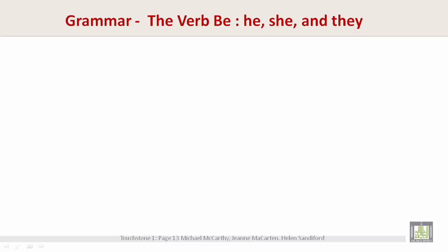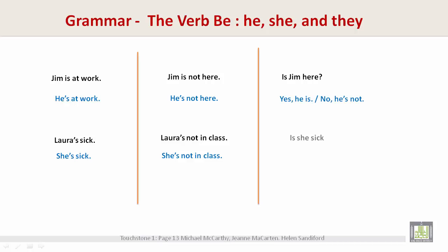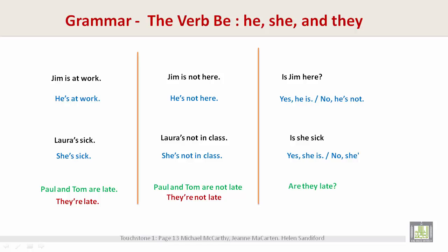The verb BE with he, she, and they. 'Jim is at work. He is at work. Laura is sick. She's sick. Jim is not here. He's not here. Laura is not in class. She's not in class.' For questions: 'Is Jim here? Yes, he is. No, he's not. Is she sick? Yes, she is. No, she's not.' 'Paul and Tom are late. They're late. Paul and Tom are not late. They're not late. Are they late? Yes, they are. No, they're not.'